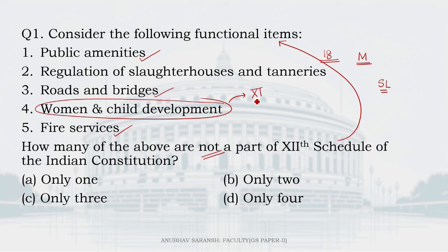Schedule 11 contains a list of 29 functional items — 29 topics on which the panchayats can be allowed to make laws. So, only one item from the list is not a part of the 12th Schedule. The answer is A. Moving on to question number 2.